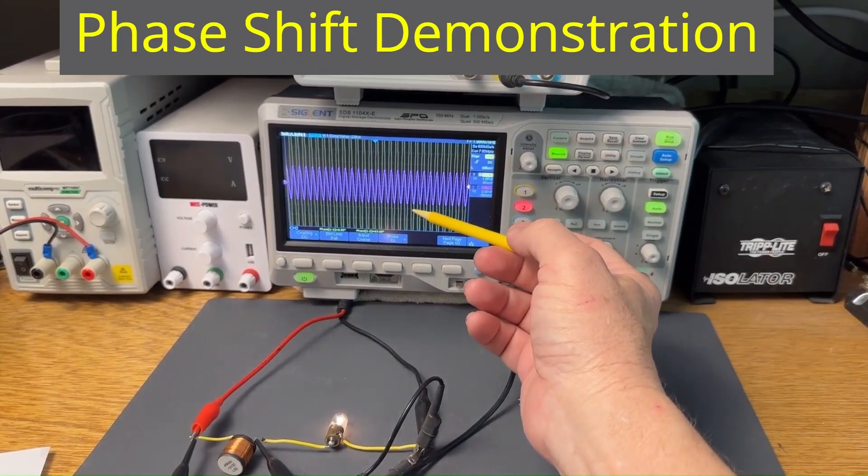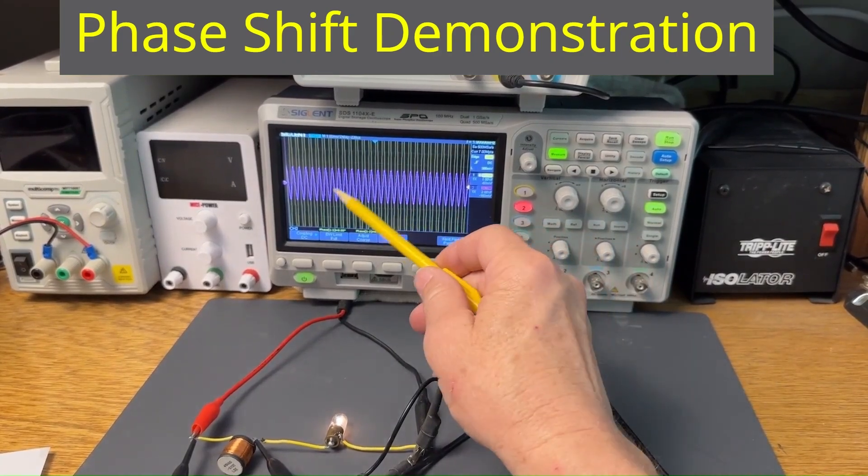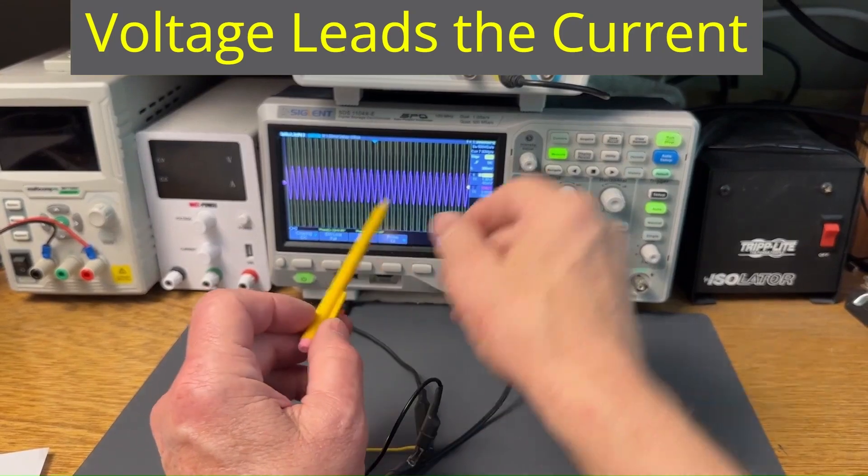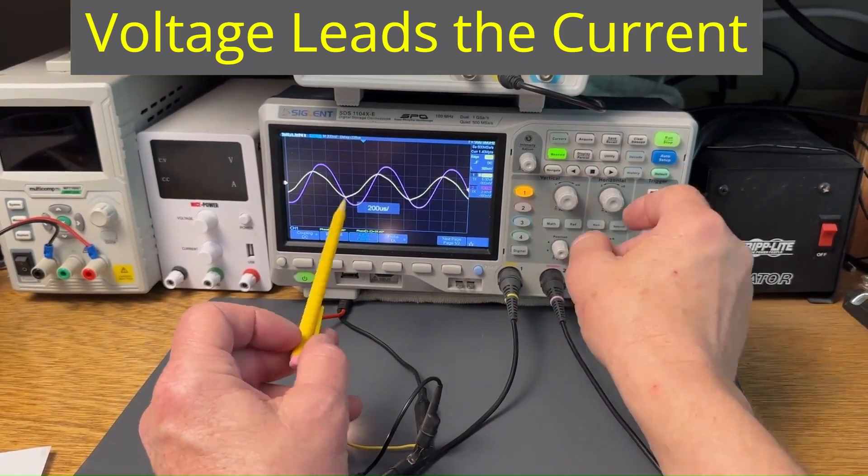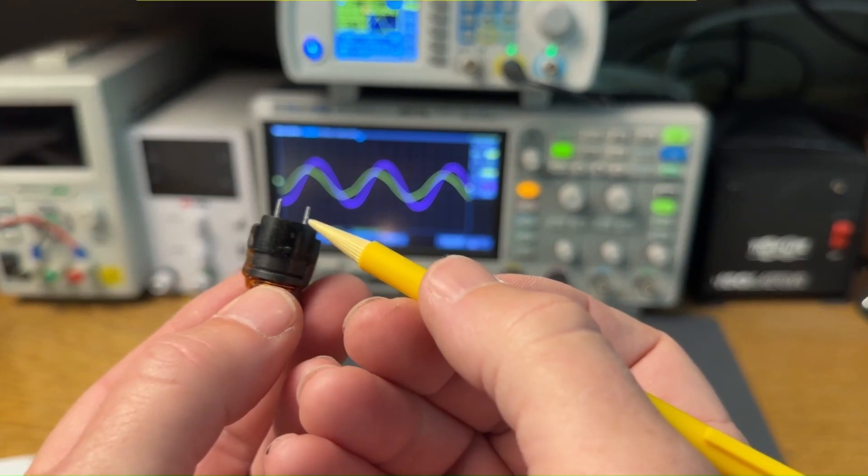As opposed to what happens with capacitive reactance, the voltage actually leads the current with inductive reactance. Why does this happen, though?